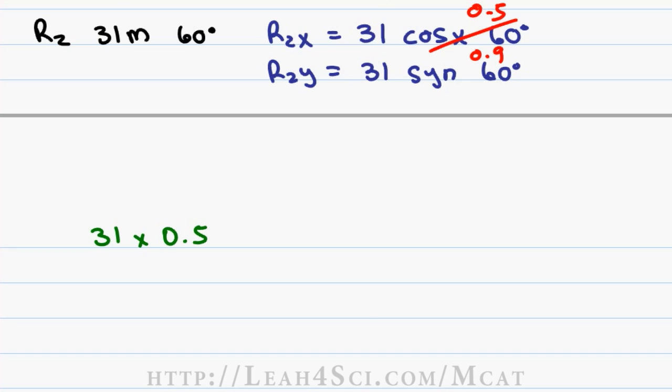So let's calculate what we have. 31 times 0.5, that's approximately 30 times 0.5 or 30 over 2 which gives me a rounded value of 15. And 31 times 0.9, once again we'll use the decimal trick, move that to the right, move that to the left, that gives me 3 times 9 which is 27. That's equal to x and that's equal to y.